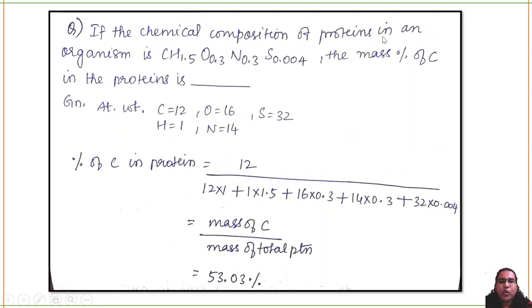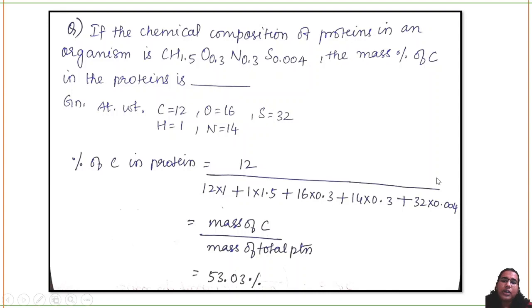Seventeenth question: the chemical composition of a protein in an organism is given. Find the mass percentage of carbon. Similar to the first question: multiply each element's composition by its atomic weight. Carbon: 1×12 = 12. Hydrogen: 1.5×1 = 1.5. Oxygen: 0.3×16 = 4.8. Nitrogen: 0.3×14 = 4.2. Sulfur: 0.004×32 = 0.128. Percentage of carbon = 12/total × 100 = 53.03%.